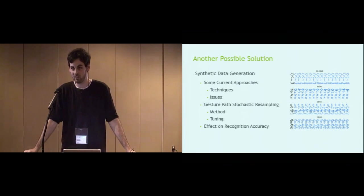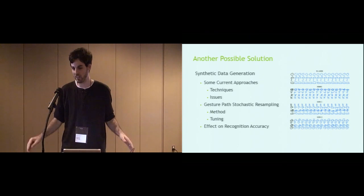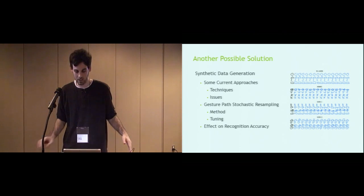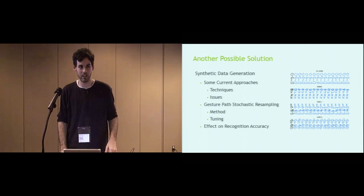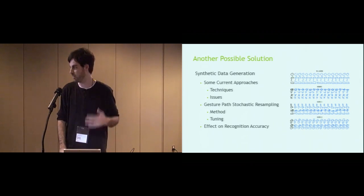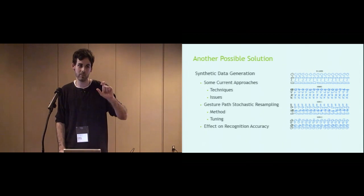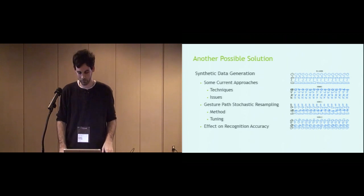So since synthetic data is not new, the first part of this presentation, I want to take you through a couple of different approaches, three of them. Not exhaust of what exists out there, but I think a good representation of what's possible. Discuss some of the issues that exist with those methods, and then I'll be in a position where I can introduce our new method, gesture pass, stochastic resampling, the method, and spend some time on the one parameter that needs to be tuned to get the most out of our method. Once we have those things in place, we can take a look at how they improve recognition accuracy.